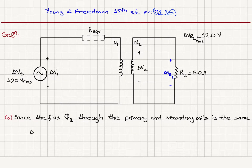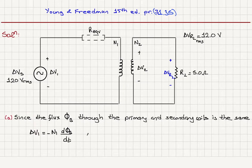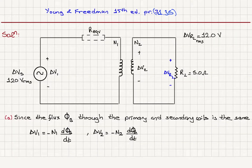The voltage across the primary coil, delta V1, is given by Faraday's law: minus N1 times d(phi_b)/dt. Similarly, the voltage across the secondary coil, delta V2, is minus N2 times d(phi_b)/dt. Because the two fluxes are the same, the ratio delta V1 divided by delta V2 equals N1 divided by N2.